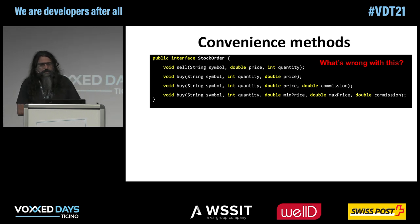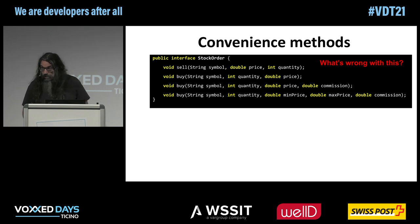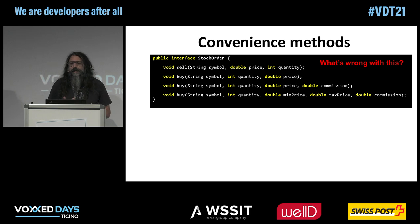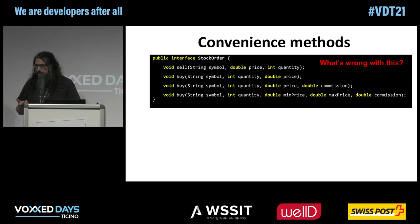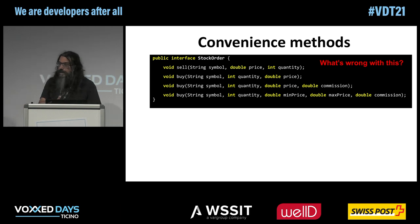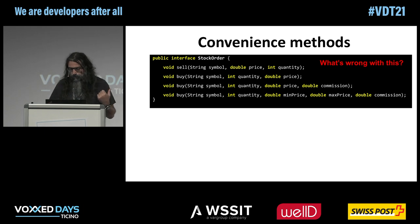Here's another example of a convenience method — my made-up API to place stock orders. I have a method to sell stocks, and then I have three different methods to buy. Why? Because in my domain model, when you buy something, the price could be fixed or could be a range, and you may or may not have a commission on the transaction. So I decided to add these three methods. What's wrong with this API? It has some bad design choices.